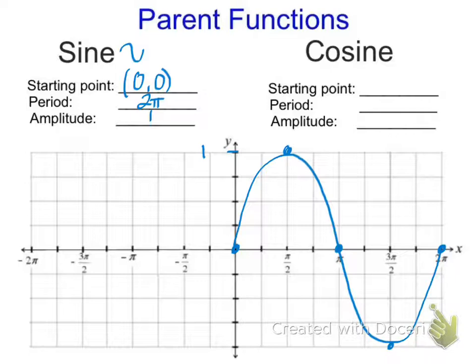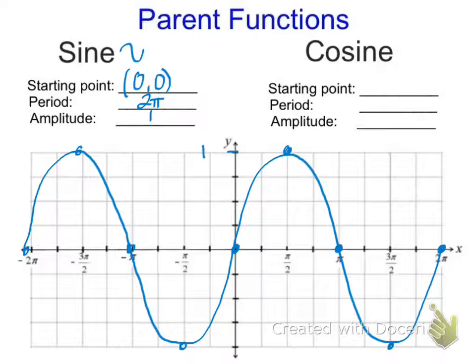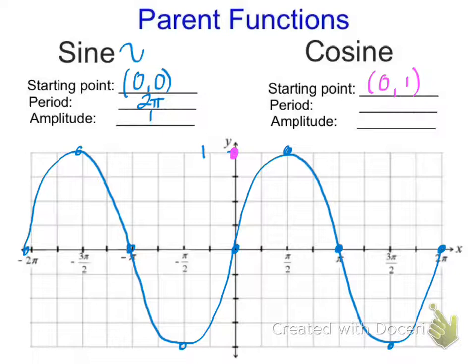Now, cosine. If we remember the parent function, we'll have a better time graphing all the transformations. The first thing to remember is that cosine starts at the maximum — cosine starts up at (0, 1). That's because the cosine of 0 degrees is 1, since cosine is the x-value on the unit circle. If we know our definitions and basic values, we can graph these much more efficiently.